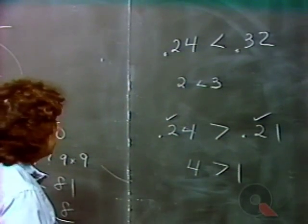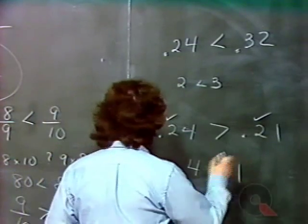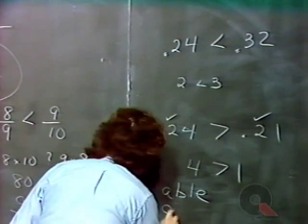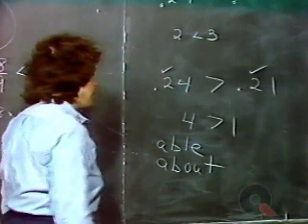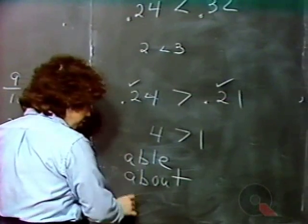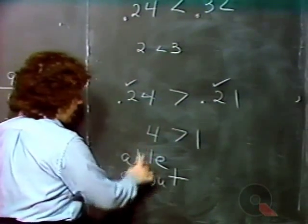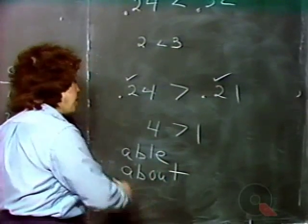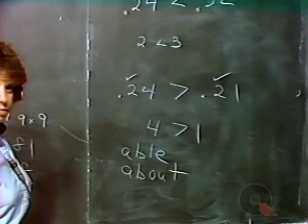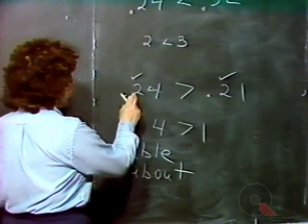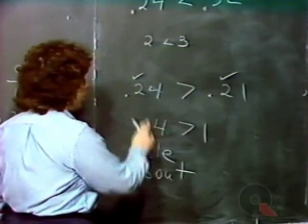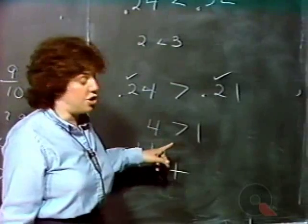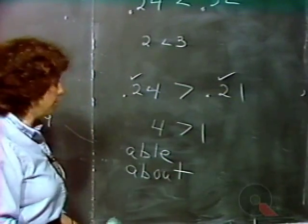This is similar to the way we alphabetize words in a dictionary. For example, with ABLE and ABOUT: if the first letters are the same, we move to the second; if those are the same, we move to the third. Since L comes before O in the alphabet, ABLE appears before ABOUT. Similarly with decimals: we look at the first digits to the right of the decimal point, and as soon as they differ, the larger digit determines the larger decimal number.